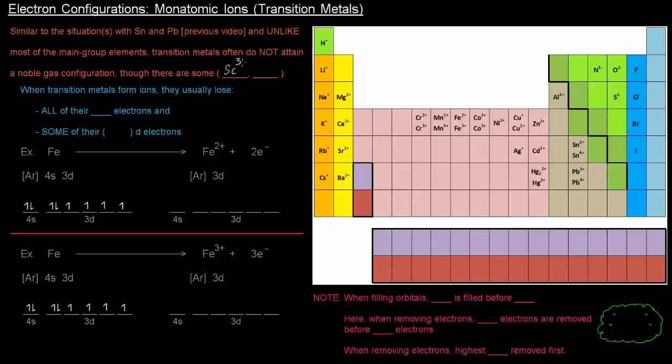Scandium forms a 3 plus ion to have a noble gas configuration, and titanium forms a plus 4 ion to get a noble gas configuration. That's not always the case though with transition block elements.